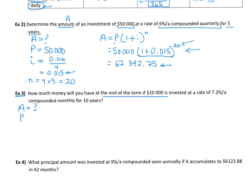If $10,000 is invested, so the principal amount is $10,000 is invested at a rate of 7.2%. That would be 0.072 and it's compounding monthly.